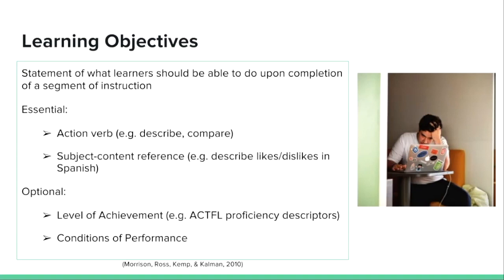Learning objectives typically contain an action verb, such as 'describe' or 'compare,' and they will also reference the content. For example, students may describe their likes and dislikes in Spanish, or compare their leisure activities with those they've learned about from the Spanish-speaking world. More detail could be added as well, such as the level of achievement or conditions of performance. For example, one could specify that learners will describe three things they like and two things they dislike in a webcam video recording with 90% accurate use of the vocabulary and grammatical forms learned in the chapter — though depending on your context, this level of detail may or may not be necessary.